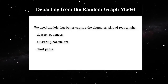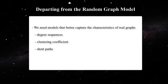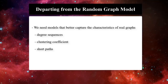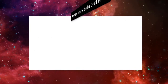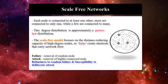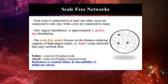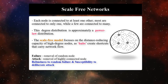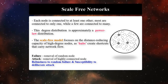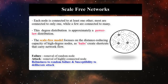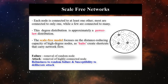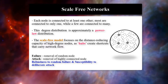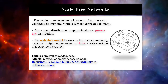So we need models that better capture the characteristics of real graphs in terms of degree sequences, clustering coefficients, and short path lengths. Graphs whose degree distribution is approximately a power law distribution are called scale-free. In scale-free networks, each node is connected to at least one other — most are connected to only one, while a few are connected to many. The adjacency matrix of an ER graph shows a uniform distribution of ones, while in contrast the adjacency matrix of a scale-free graph has ones lumped in columns and rows for a few nodes.